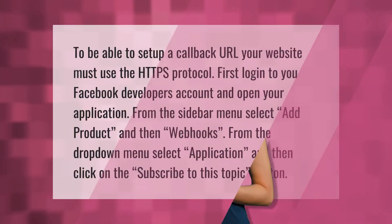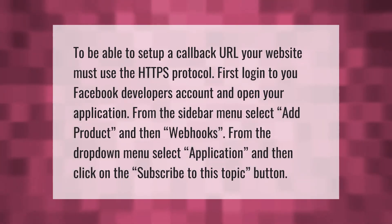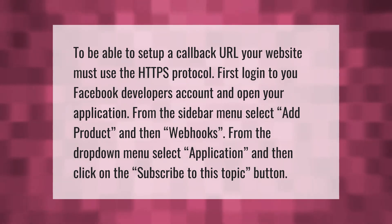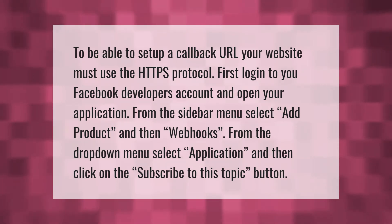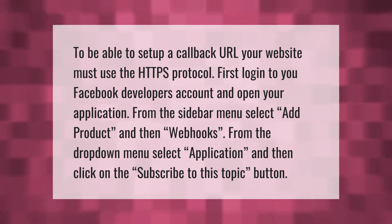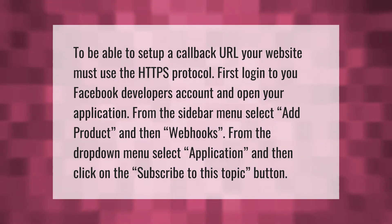To be able to set up a callback URL, your website must use the HTTPS protocol. First, log in to your Facebook Developers account and open your application. From the sidebar menu, select Add Product, then Webhooks. From the drop-down menu, select Application and then click on the Subscribe to this Topic button.